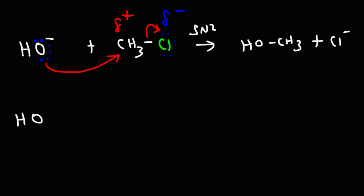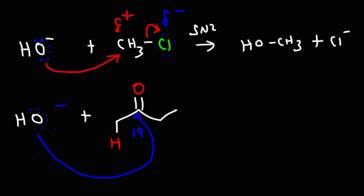Here's another example: hydroxide reacting with 2-butanone. Whenever you have a carbonyl group, the hydrogens on the alpha carbon are relatively acidic — the pKa for this hydrogen is around 19. Hydroxide has two choices: it can act as a nucleophile and attack the carbonyl carbon, or it can act as a base and abstract a proton. Any time hydroxide attacks a carbon it behaves as a nucleophile, but when it abstracts a proton it behaves as a base. So when it grabs that proton, what happens to the C-H bond? Where will the electrons go?